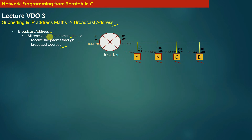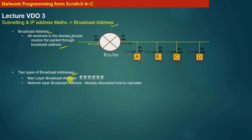Broadcast address is used when we want all the machines present in the same subnet to receive and process the packet. Now there are two types of broadcast addresses: the MAC layer broadcast address and the network layer broadcast address. The MAC layer broadcast address is all bits one, so it is very simple — it has all its 48 bits as one. In hexadecimal notation we represent the MAC layer broadcast address as all F's.